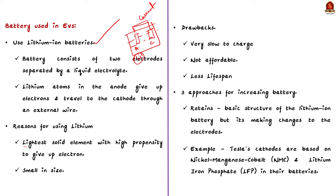Lithium is particularly used for several reasons: it is the lightest solid element with the highest propensity to give up electrons, and it is smaller in size, enabling lithium ions to efficiently travel between electrodes through the electrolyte. On the other hand, there are disadvantages — lithium-ion batteries are very slow to charge, not affordable, have less lifespan, and there are environmental issues associated with the mining of lithium. All these require an urgent need to either improve their architecture or replace them.